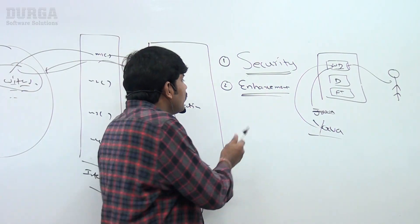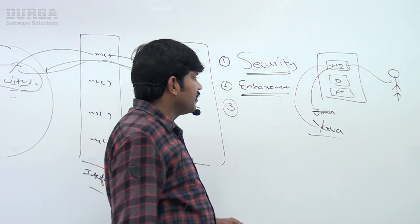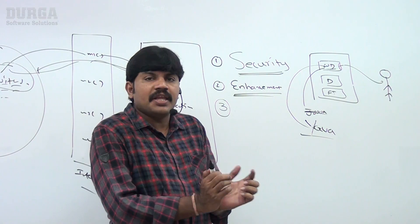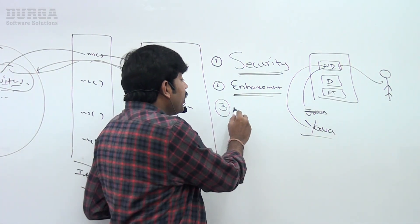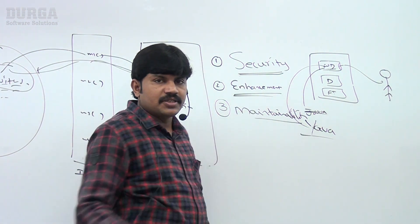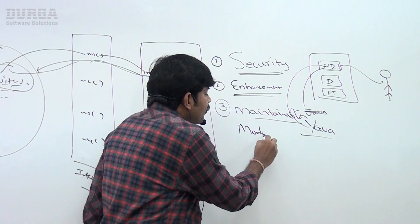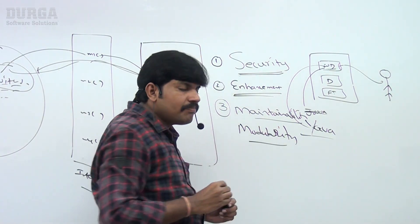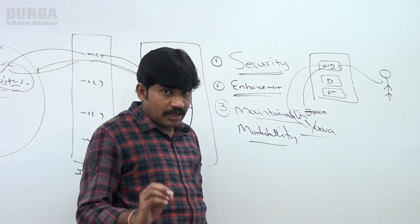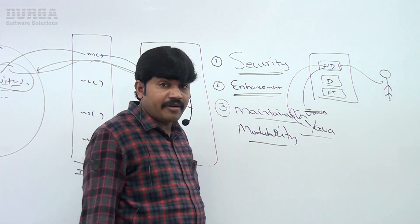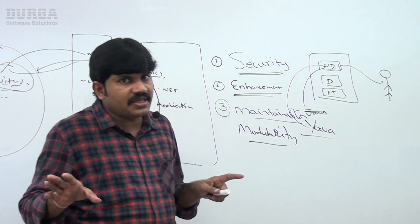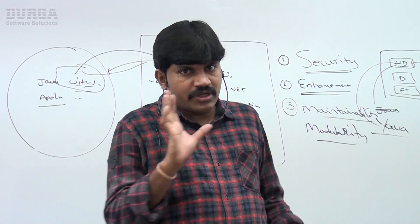The third advantage: if abstraction is there and you are not going to highlight your internal implementation to the outside person, then maintainability of the application is going to be improved. Modularity of the application is also going to be improved. So compulsorily while developing code, we should employ abstraction. Security, enhancement, and maintainability and modularity of the application are the key advantages.